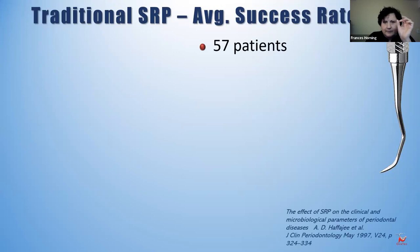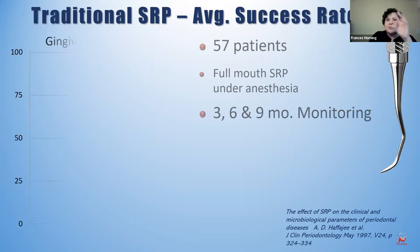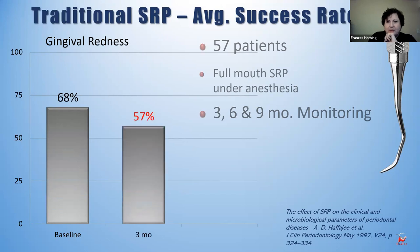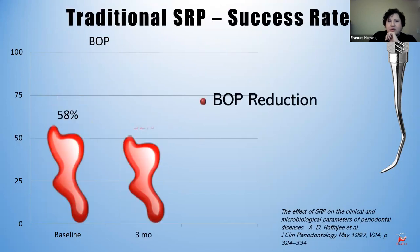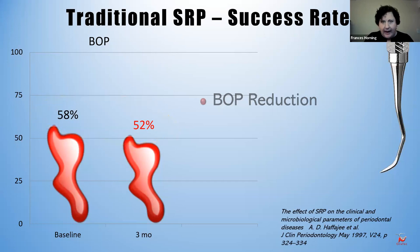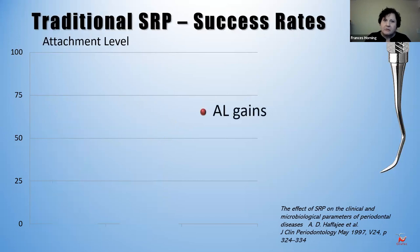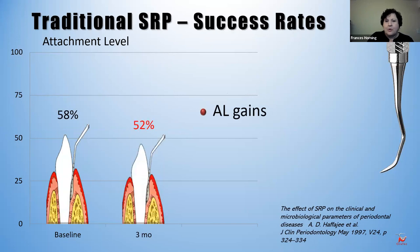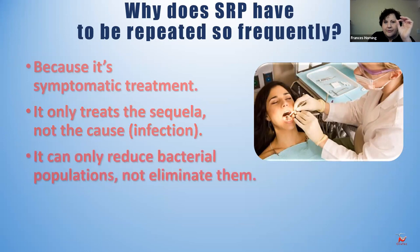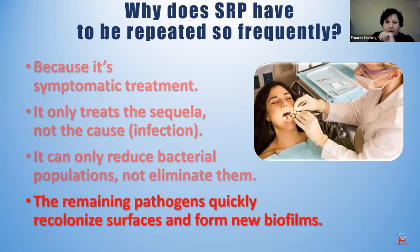You have to disrupt the biofilm. Once the biofilm is disrupted, it takes a while to regrow. Even if it's not thoroughly removed, as long as patients are modulating and disrupting it, it takes too long for it to reform. In a study of 57 patients monitored at 3, 6, and 9 months after SRP, redness levels improved only 11%, bleeding on probing reduced only 6%, and attachment level gains were only 6%. That's because we're only removing calculus, not modulating the biofilm. We're treating the symptoms, not the cause. Removing calculus is not treating the cause — you're leaving the pathogens behind.